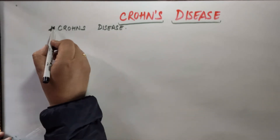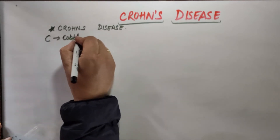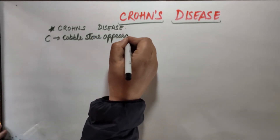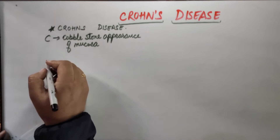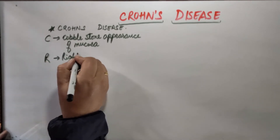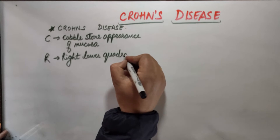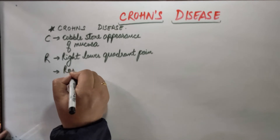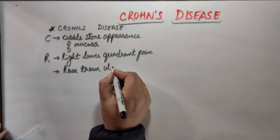In this mnemonic, C stands for cobblestone appearance of mucosa. R stands for right lower quadrant pain. R also stands for rose thorn appearance of ulcers.